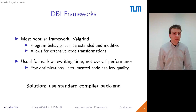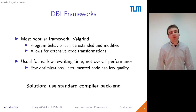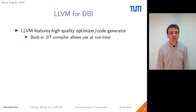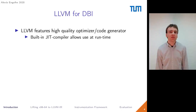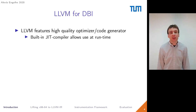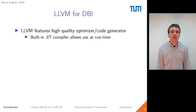The solution to this problem is to use a full compiler backend, which alleviates the problem of low code quality. One very popular code generation framework is the LLVM compiler infrastructure, which features a high-quality optimizer and code generator. Especially interesting for dynamic binary instrumentation is the built-in JIT compiler, which allows code generation at runtime.